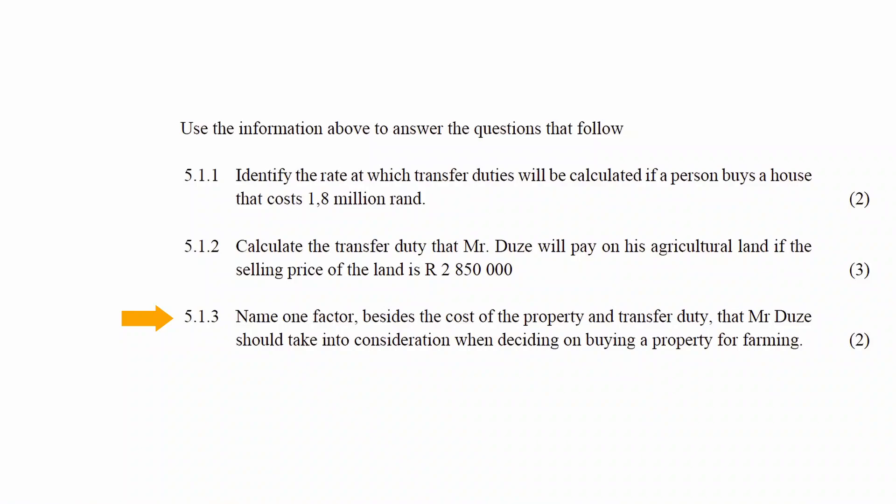In Question 5.1.3, you have to name one factor besides the cost of the property and the transfer duty that Mr. Doozy should take into consideration when deciding on buying a property for farming. Another consideration could be the availability of water on the property, because farming requires a lot of water.